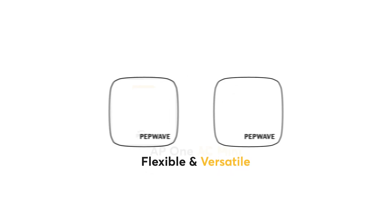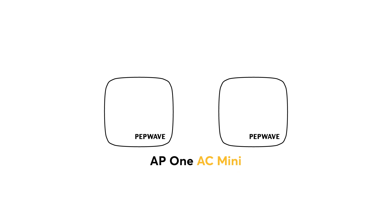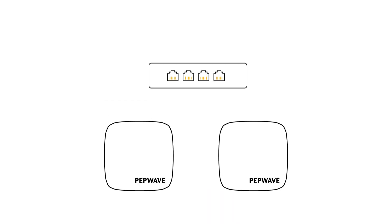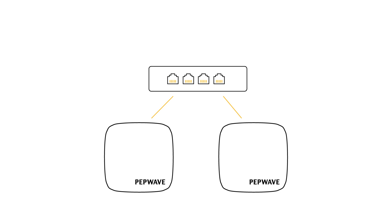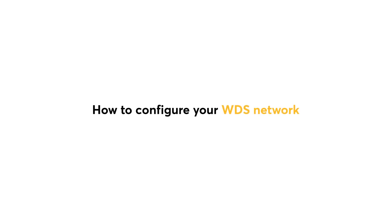In this demo, I'll be using two AP1AC mini devices connected to a router to achieve these network types. First, I'll explain how to configure your WDS network.